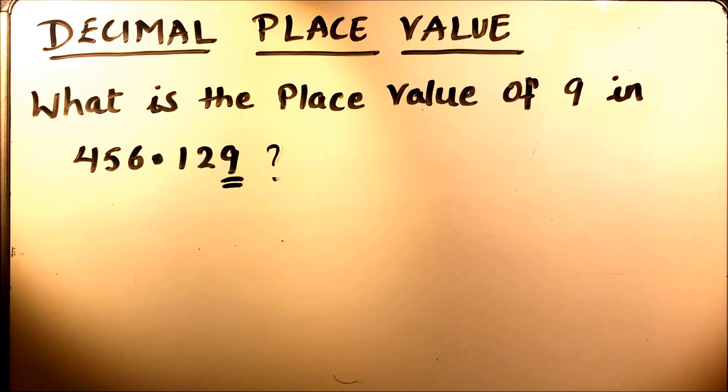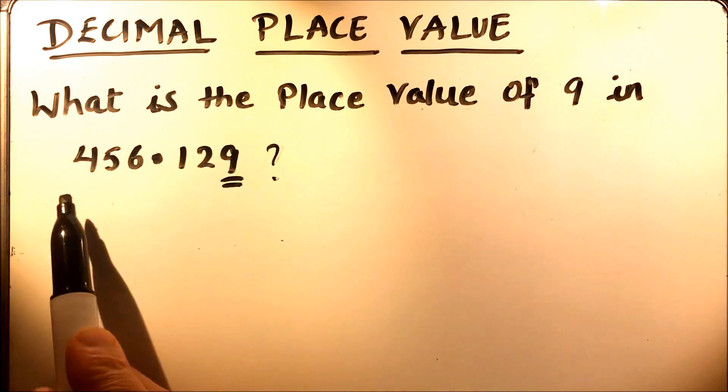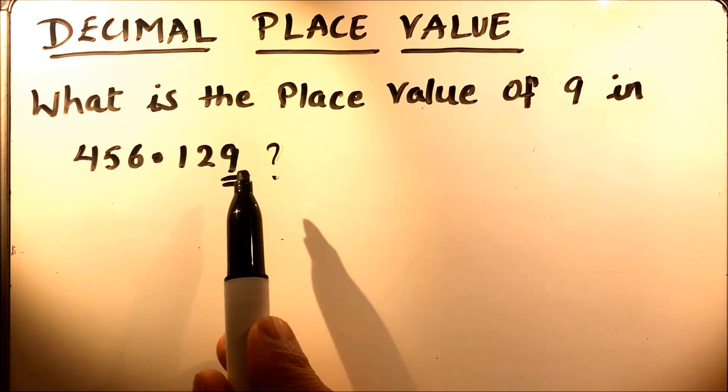Hello viewers, today we are going to learn about the place value of a number in decimals. So here we have a question to find the place value of digit 9 in this number 456.129.